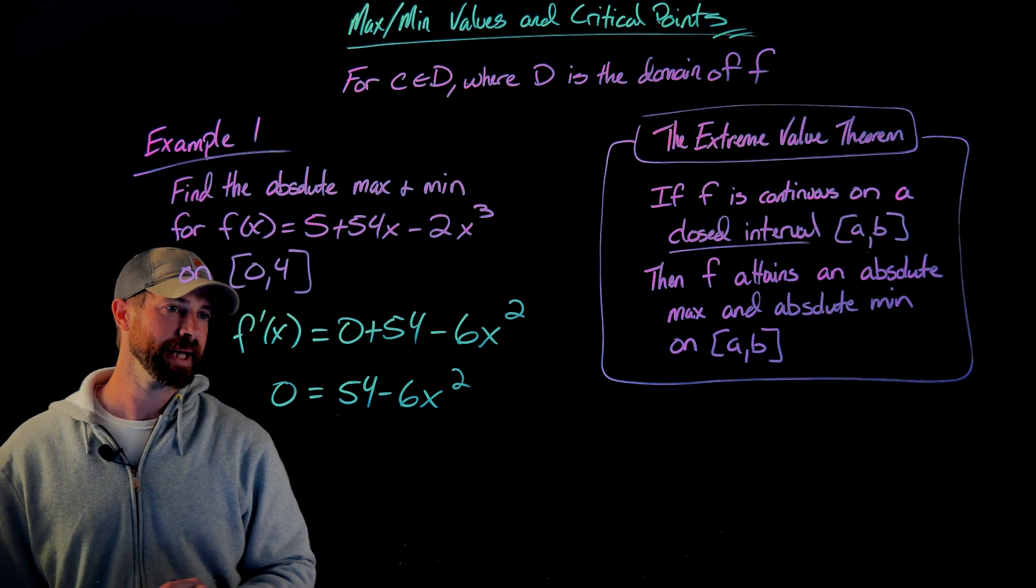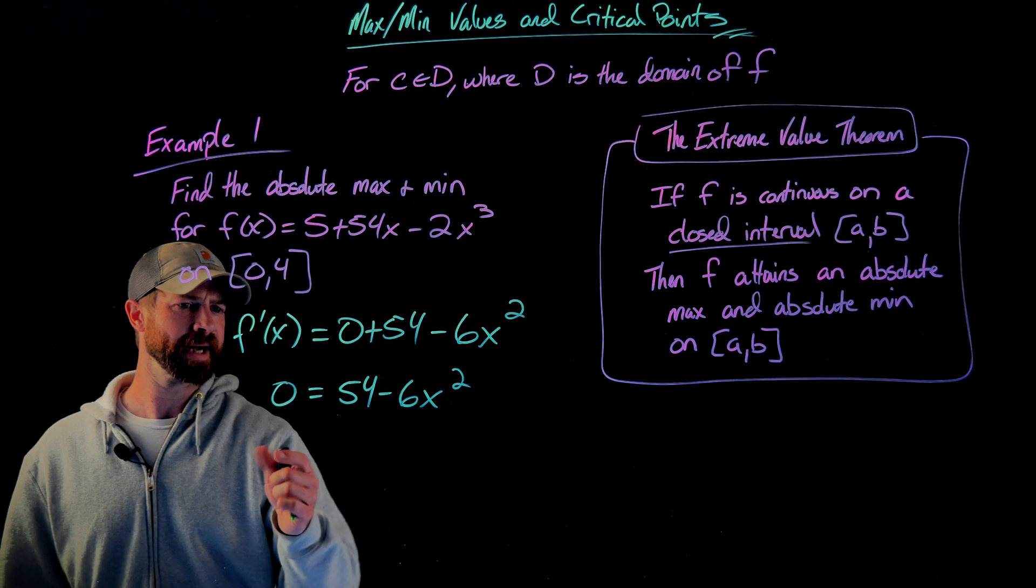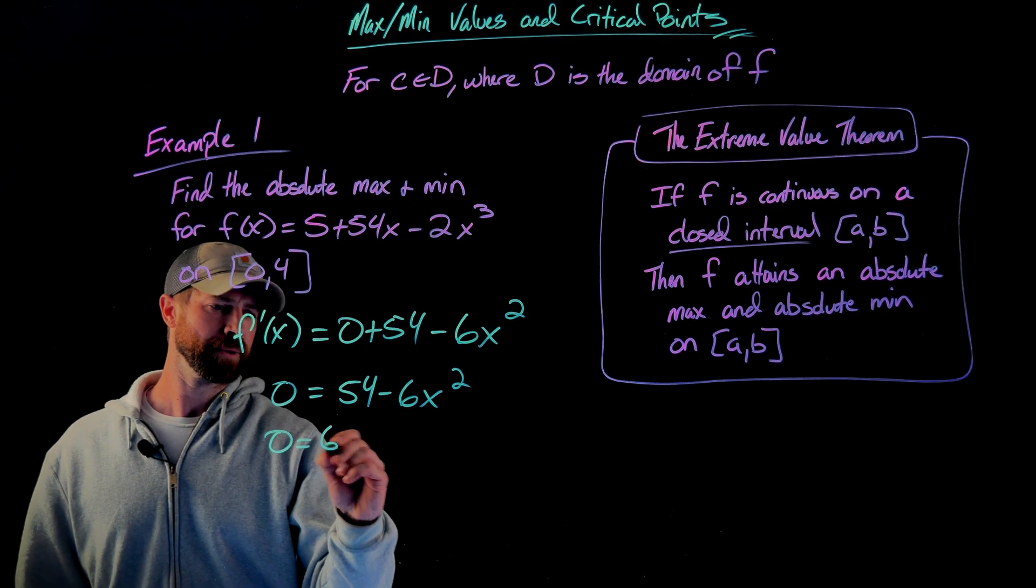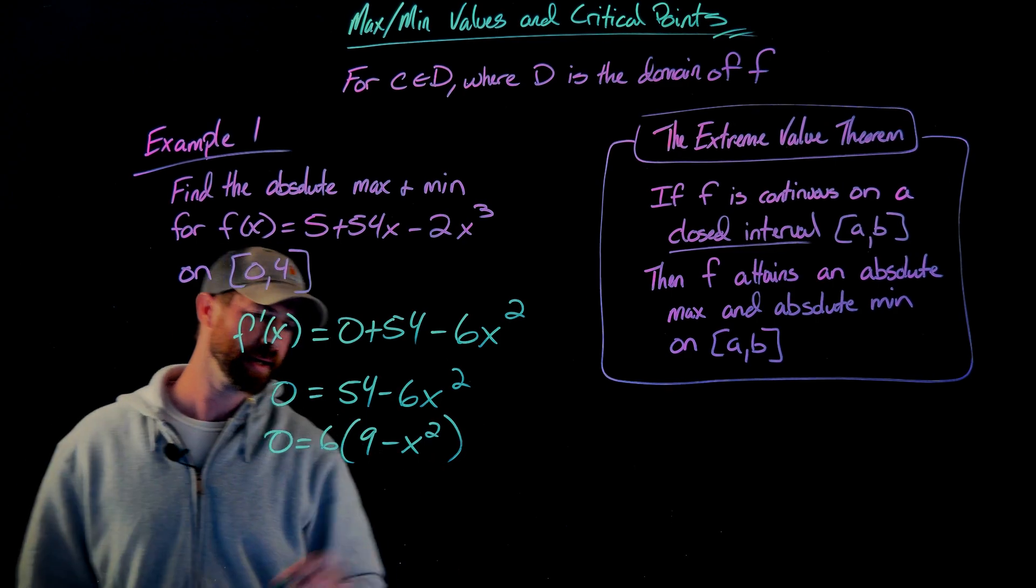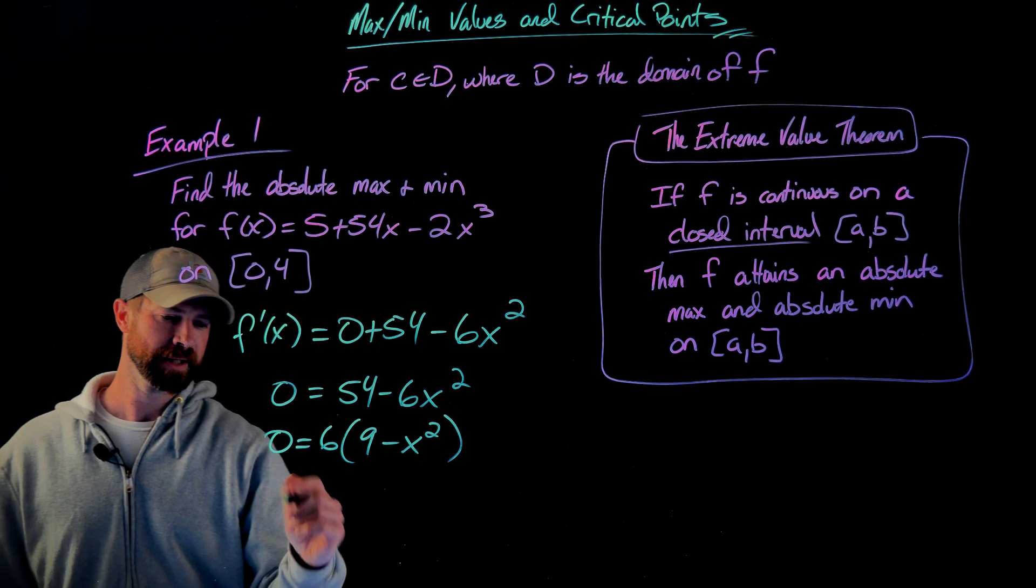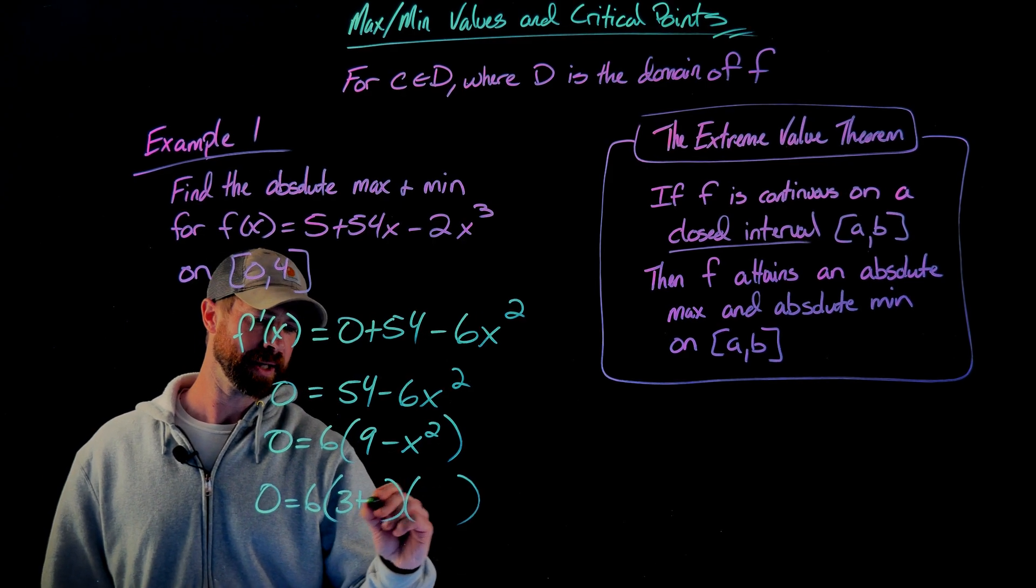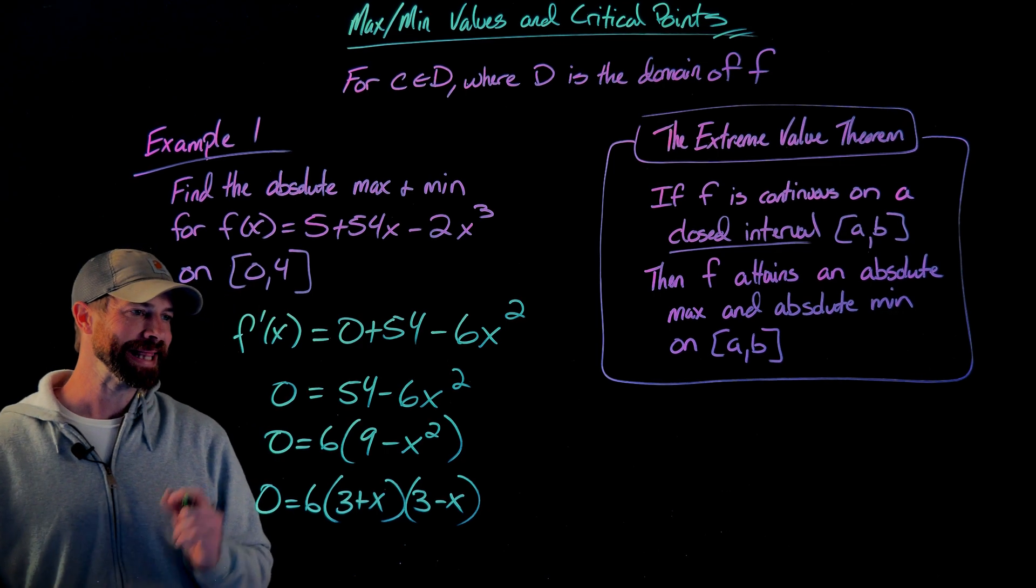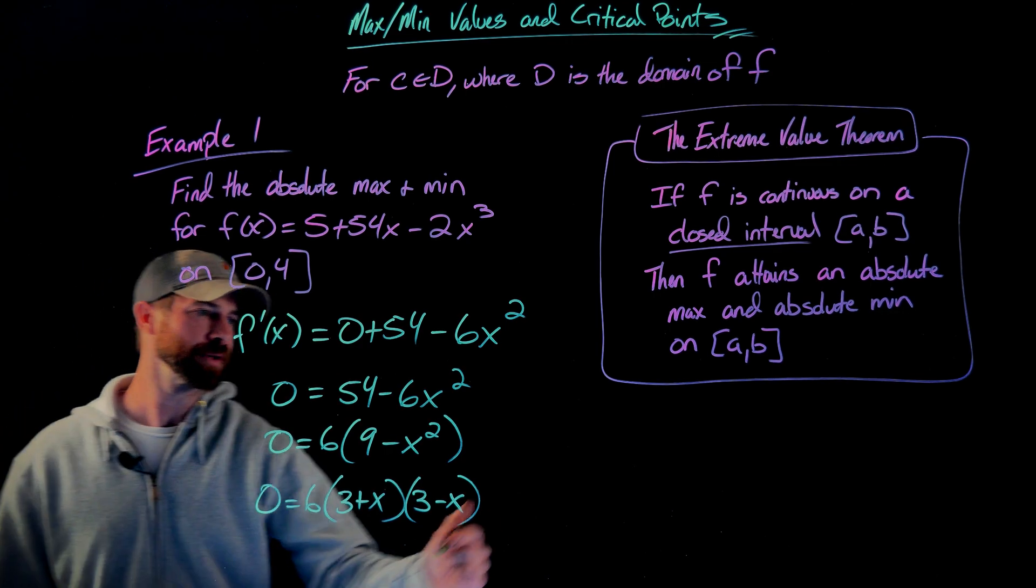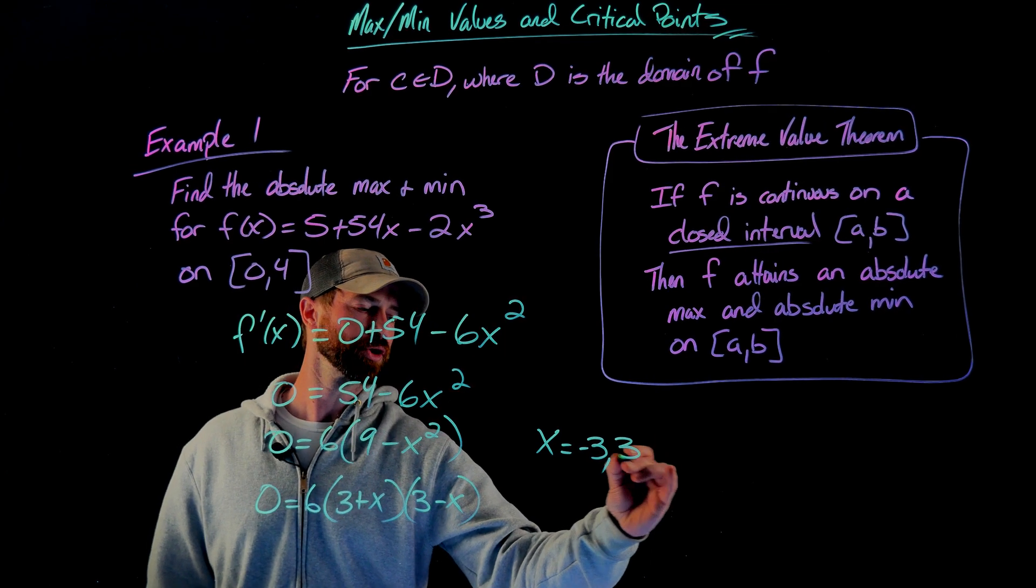I'm going to factor this. I'll factor out a 6 first, so I pull out a 6 and get 9 - x². This is actually a difference of squares, making this pretty easy. This is simply (3 + x)(3 - x). This gives me critical numbers of x = -3 and x = 3.